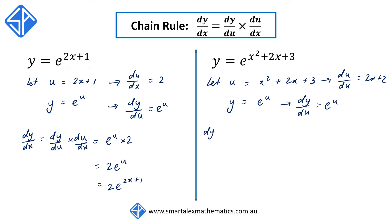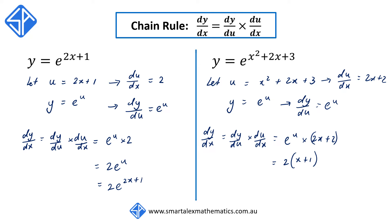Applying the chain rule, dy/dx is equal to dy/du times du/dx, and this simplifies to e to the u times 2x plus 2. We can simplify this by factorizing out the 2 to get 2 times x plus 1. Replacing u with x squared plus 2x plus 3, we get dy/dx equal to 2 times (x plus 1) times e to the power of x squared plus 2x plus 3.